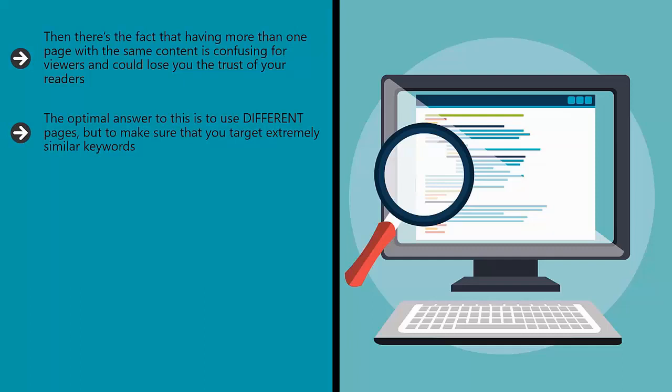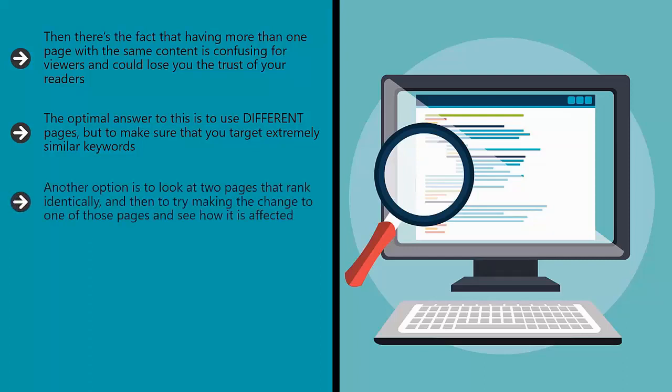Use a keyword research tool like KW Finder (www.kwfinder.com) and then target keywords that have similar search volumes and similar KD (keyword difficulty) ratings. When you do this, you can try different techniques on similar pages with similar objectives and see which one comes out on top. Another option is to look at two pages that rank identically, and then try making the change to one of those pages and see how it is affected. This is a slightly better strategy because you are starting from a similar place.